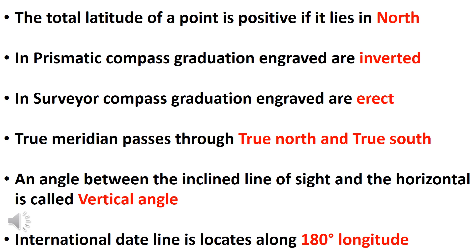The angle between the line of sight and the horizontal is called a vertical angle. The International Date Line is located along the 180-degree longitude.